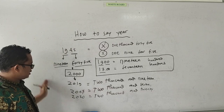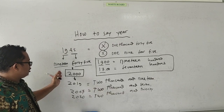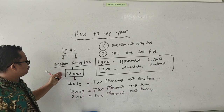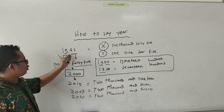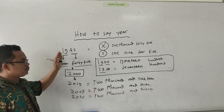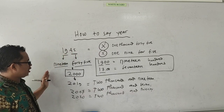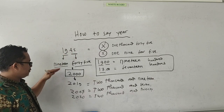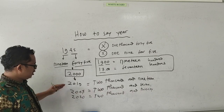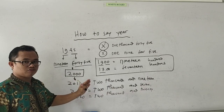So, how to say year? We review again. Jika di bawah tahun 2000, maka kita ucapkan menjadi dua kelompok: 19-45, atau 19-30, dan sebagainya. Tetapi kalau 2000 ke atas, contohnya 2027 atau 2020, langsung kita katakan 'two thousand...'.